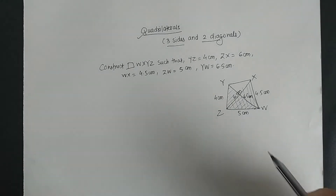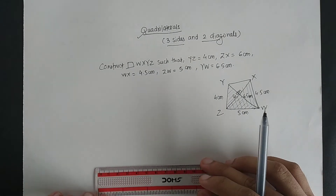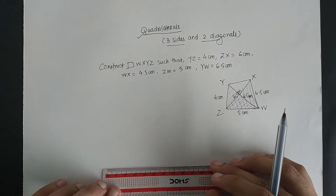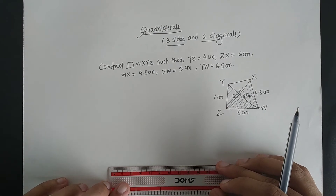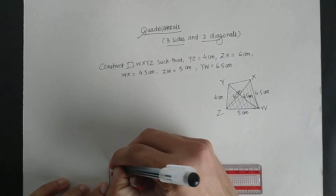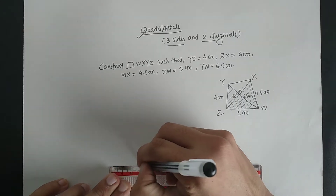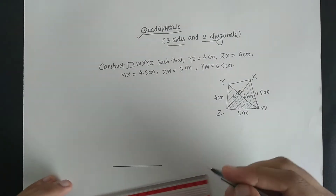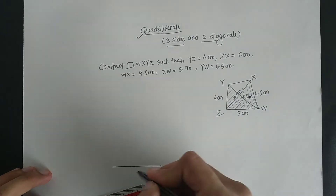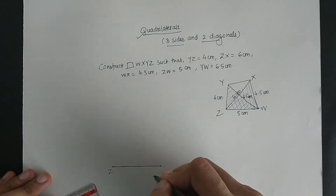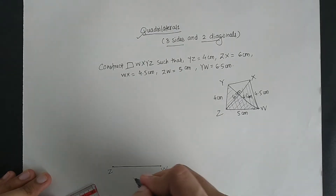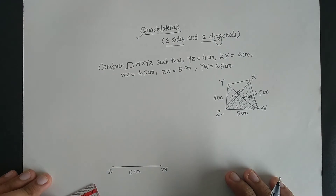The length of ZW is 5 centimetre, so I am going to draw a line of 5 centimetre. This is the length of 5 centimetre and this is my ZW, which is 5 centimetre.